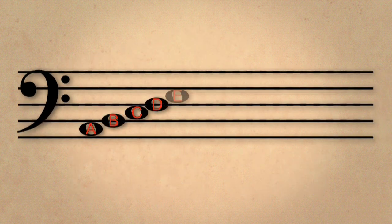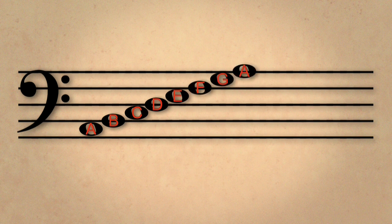Continuing to ascend beyond the A on the top line is a B. If we add a ledger line, we now have a C.